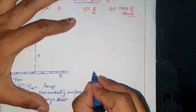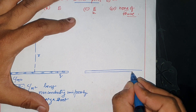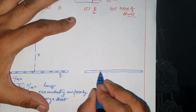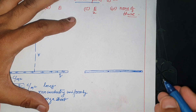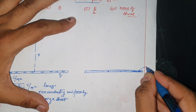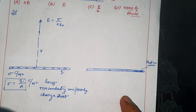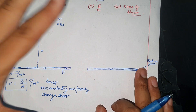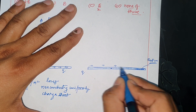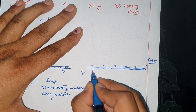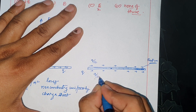Now let's take a conducting sheet — also thin and long. Since it is a conducting material, the electric field inside the conductor at every point is zero. When we give this conducting sheet the same charge Q, the charge distributes on its outer surfaces. Since the sheet is alone, Q/2 appears on each side.